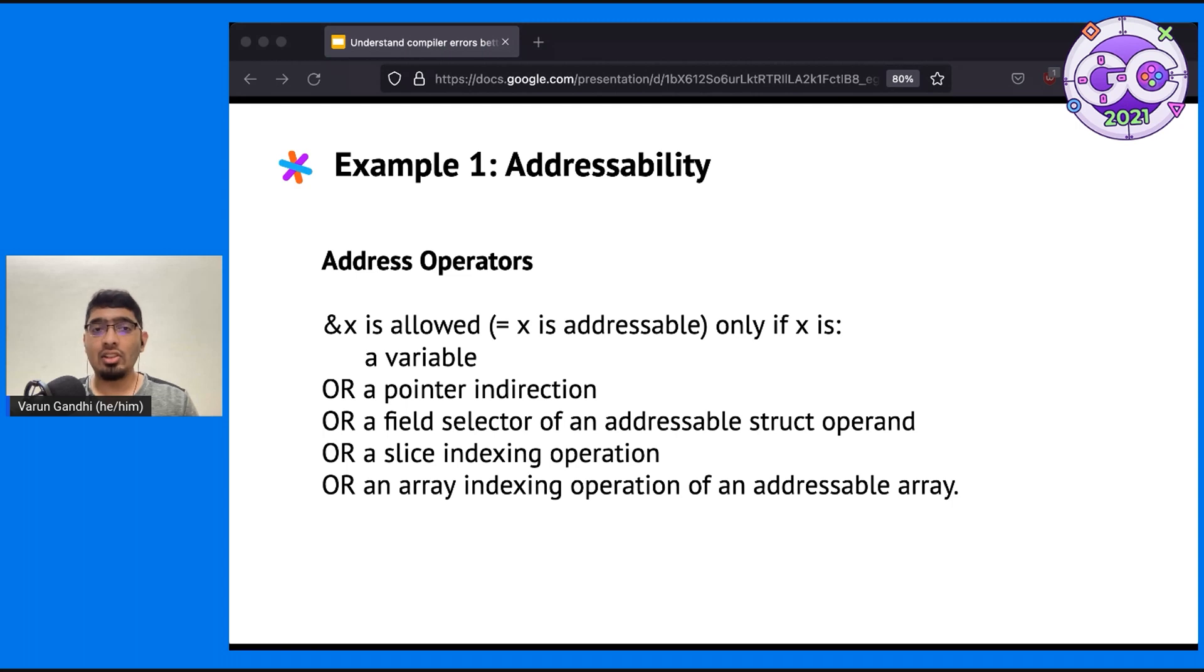In the Go spec, there's a section called address operators which covers this. I've slightly tweaked the wording in that section and shown it here. According to the spec, the address of x is only well defined if x falls into one of the five cases described here. It's a variable, a pointer, a field access, or a slice or array indexing operation. Let me remove those last two, since those won't be relevant for us.